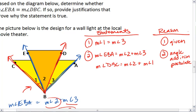Okay, now what can we do? We want to make sure that EBA equals DBC. Well, I can do substitution.